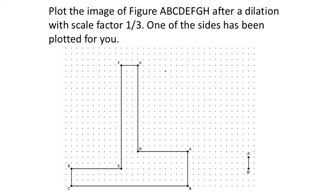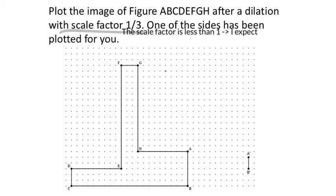You guys try this one: plot the image of figure ABCDEFGH after a dilation with a scale factor of one-third. One of the sides has been plotted for you. The scale factor is one-third, which is less than one, so I'm expecting the image to be smaller — about one-third the size in terms of side lengths.